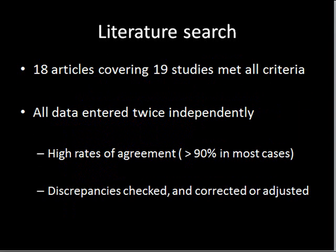This process yielded 18 articles covering 19 studies that met those criteria, and all the data from these 18 articles and 19 studies were entered twice independently. I entered all of the studies myself, and the studies were also divided approximately evenly among my three students who worked independently. When we were done with that process, we compared our databases and found that they tended to be very consistent with each other.